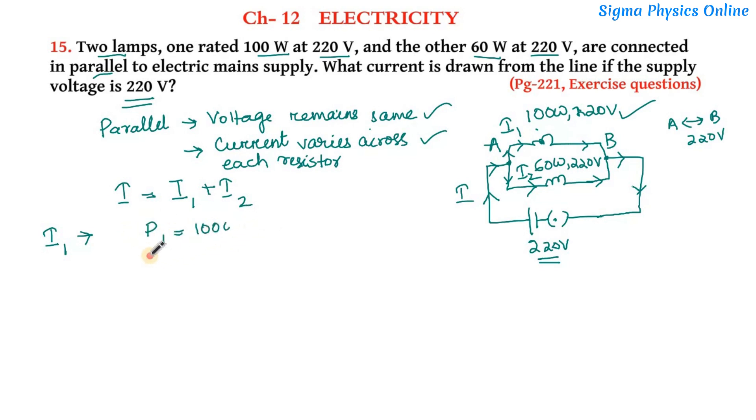lamp whose power rating is 100 watt and it's operating at 220 volt. So let's write down: power is given as 100 watt and the potential difference V is 220 volt. So we know the formula power is equal to voltage multiplied by current. Now here P1 will be V into I1, so I1 will be P1 by V, that is P1 is 100 by V is 220, so that gives us 5 by 11.